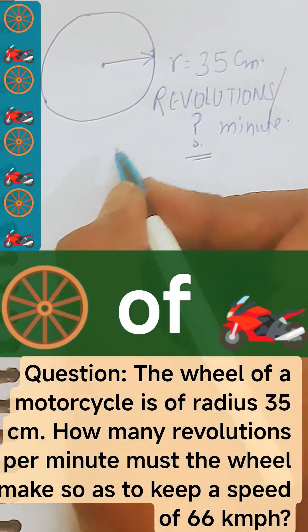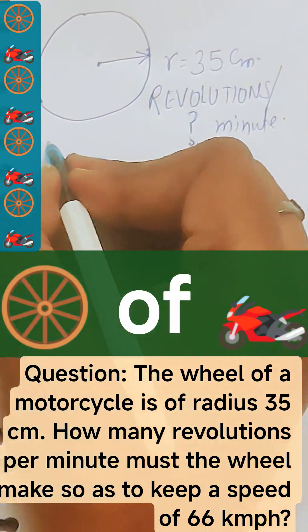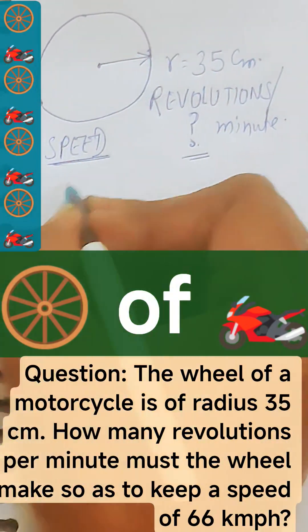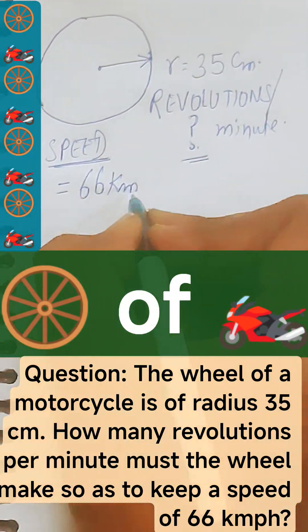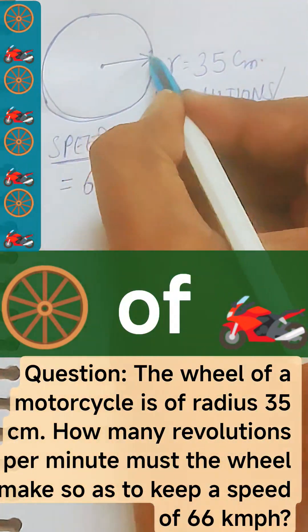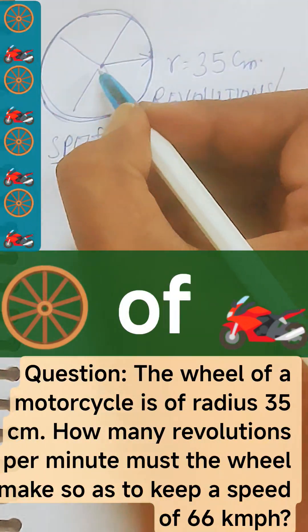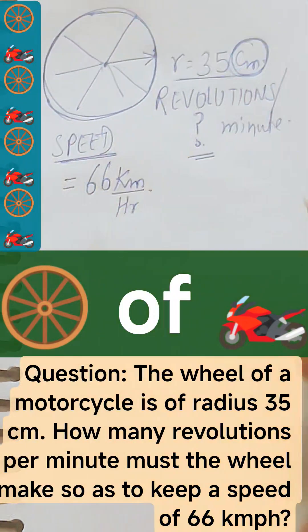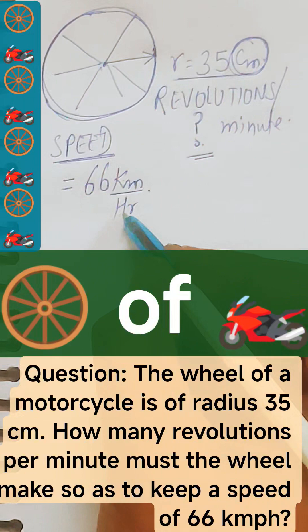Now the revolutions per minute need to be found so that the speed should be equal to 66 kilometer per hour. So mind it students, this is in kilometer and the radius of the wheel of the circular tire is equal to 35 centimeter. So convert this kilometer into centimeter and this hour into minute.